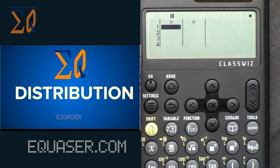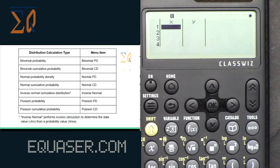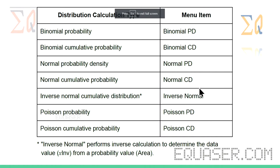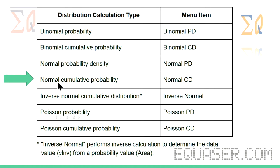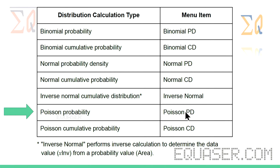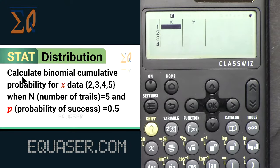Now let's see how we can use the distribution feature of this calculator. For distribution we can have: Binomial Cumulative Probability (displayed as Binomial CD), Normal Probability Density (Normal PD), Normal Cumulative Probability (Normal CD), Normal Inverse Cumulative (Inverse Normal), Poisson Probability, and Poisson Cumulative Probability.